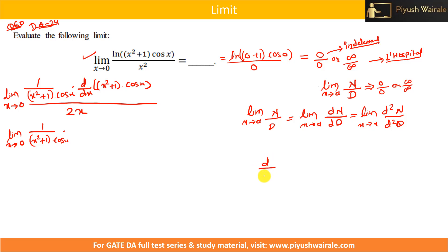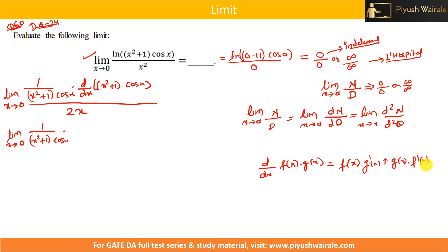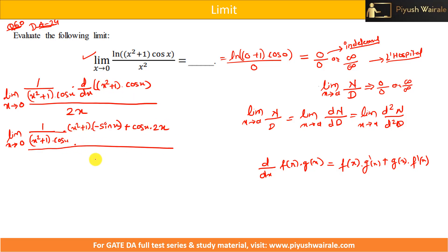We need to apply the product rule for the derivative of (x² + 1)·cos(x). The product rule states: derivative of f(x)·g(x) = f(x)·g'(x) + g(x)·f'(x). So keeping (x² + 1) as a constant times derivative of cos(x) which is −sin(x), plus cos(x) as constant times derivative of (x² + 1) which is 2x. The denominator derivative is 2x.